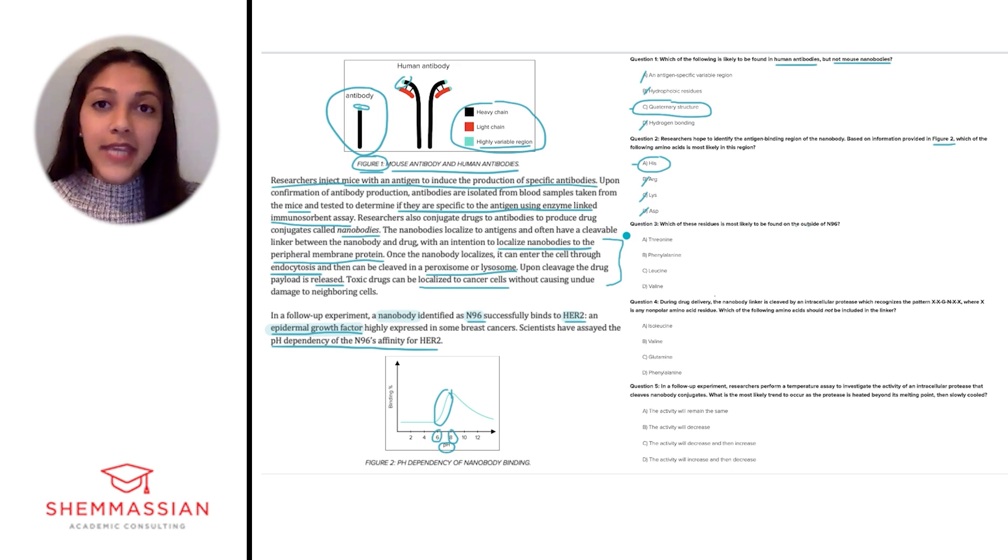And then question 3 asks us about which of the following residues is most likely to be found on the outside of N96. This question also requires us to rely on our knowledge of amino acids.